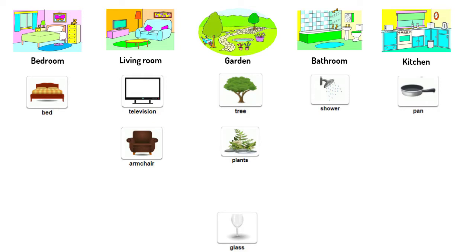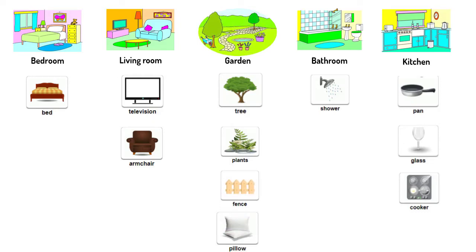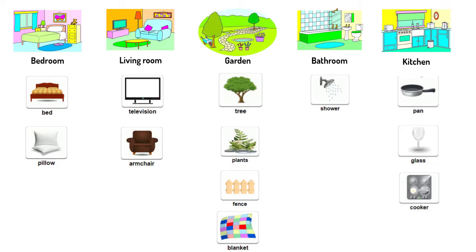And the next picture is glass. Where can you find glass? It is in the kitchen. The next is cooker — it also goes to the kitchen here. The next is fence — where can you find a fence? It is in the garden here. The next picture is pillow — it goes to the bedroom here. And what about blanket? It also goes to the bedroom.